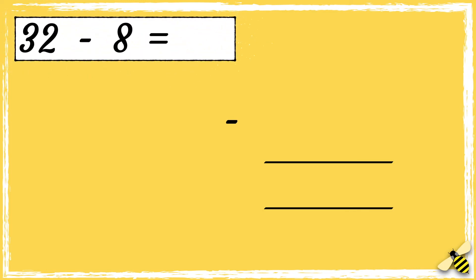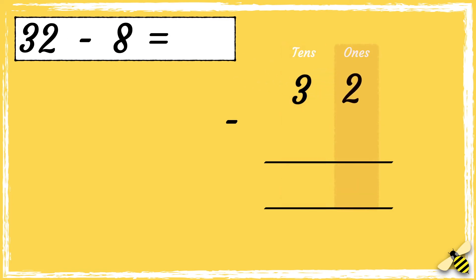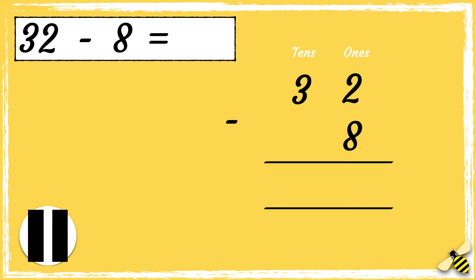Let's have a look at one more example. Here is a number sentence: 32 take away eight. Remember to line your numbers up correctly, so we have the tens in one column and the ones in another column. The number 32 has three tens and two ones. The number eight has eight ones.